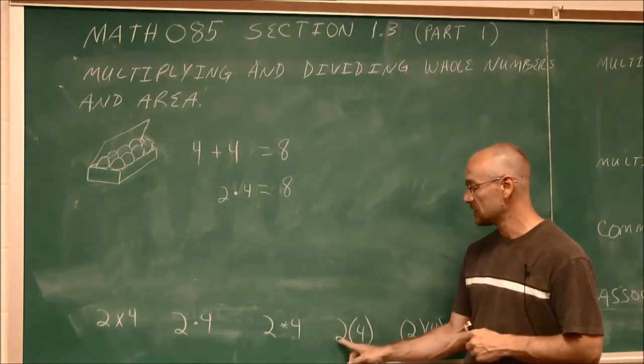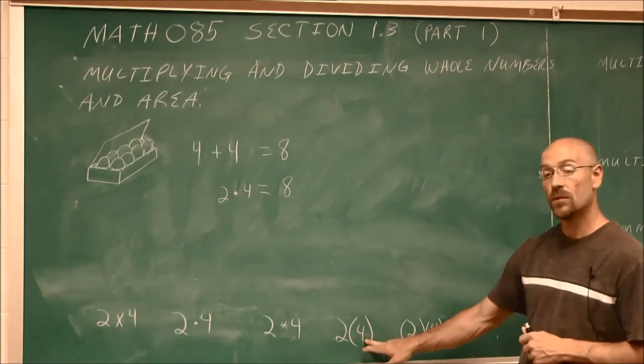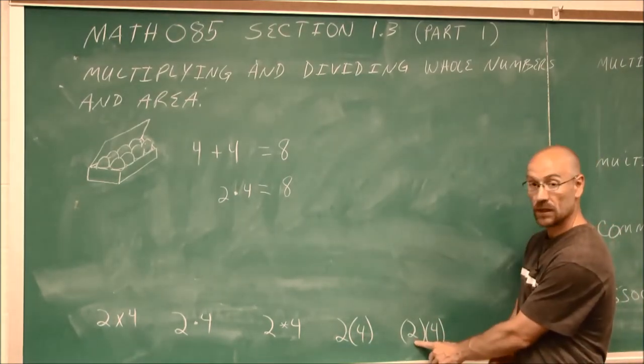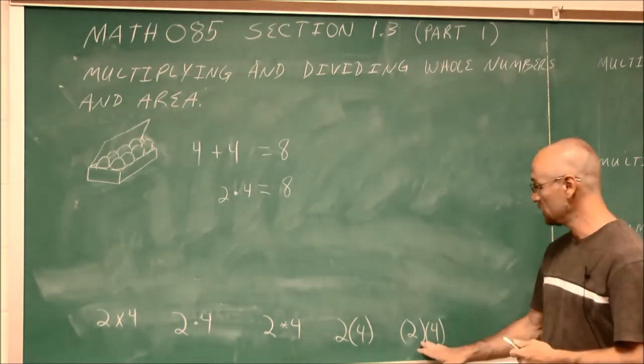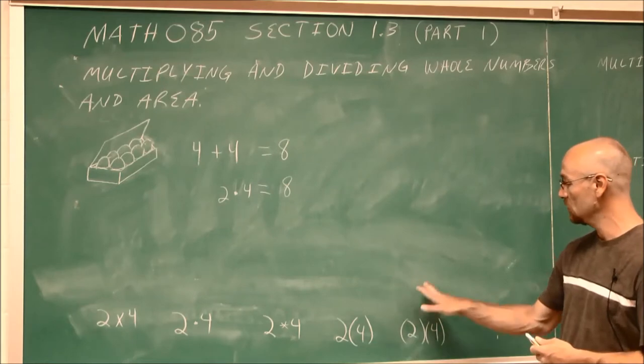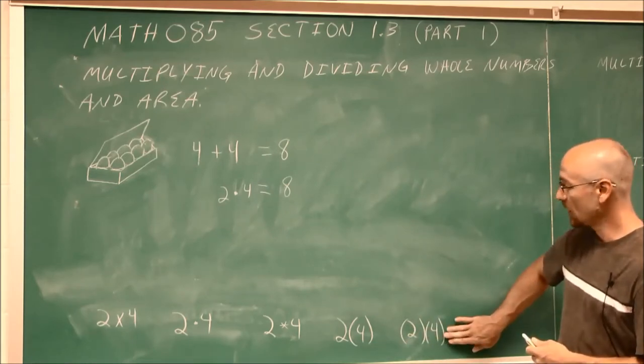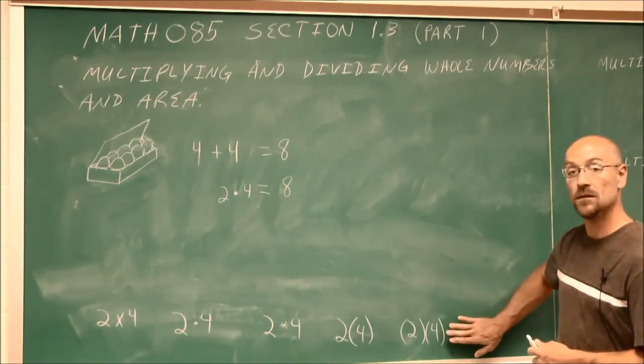It's saying two of what's in this parentheses, two times four. So that's also multiplication. Here we have multiplication as well, except both quantities are in parentheses. Multiplication through adjacency, we have two times four, the quantity two times the quantity four. So be aware that all five of these different representations mean multiplication.